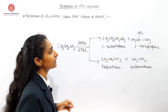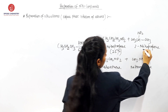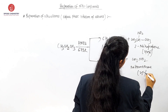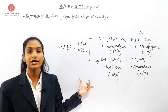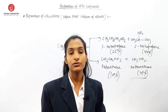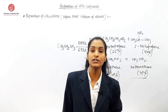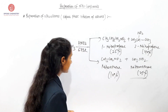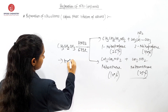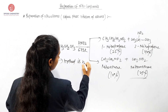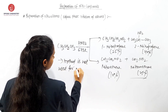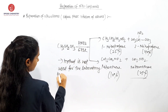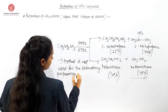What will be their percentages? 1-nitropropane is 25%, 2-nitropropane is 40%, nitroethane is 10%, and nitromethane is 25%. So we obtain a mixture of products. That is why we don't use this process for laboratory purposes.